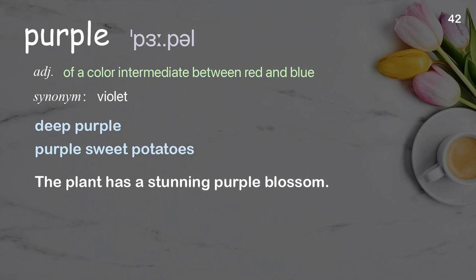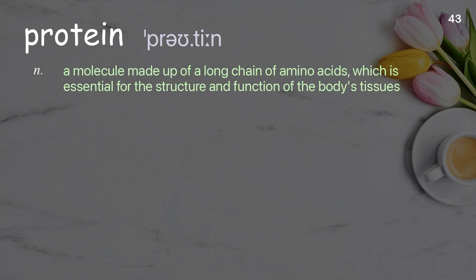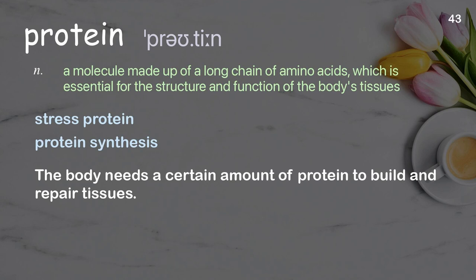Protein: a molecule made up of a long chain of amino acids, which is essential for the structure and function of the body's tissues. Examples: stress protein. The body needs a certain amount of protein to build and repair tissues.